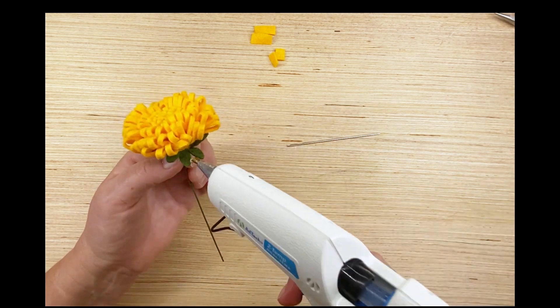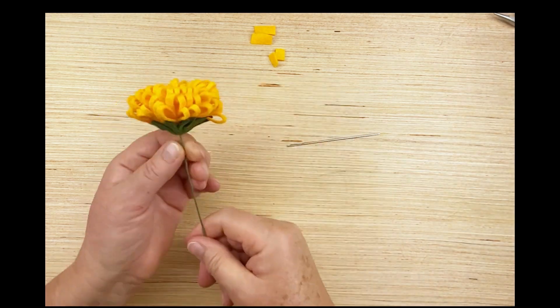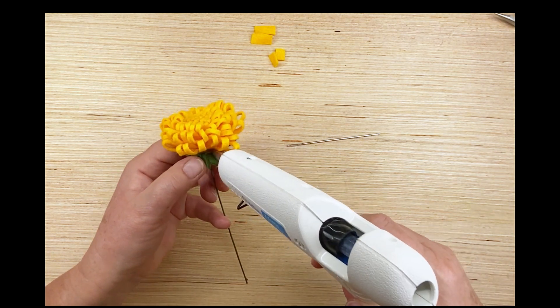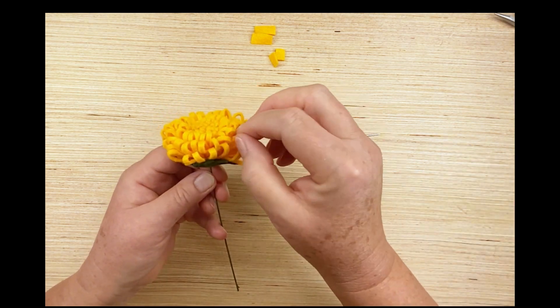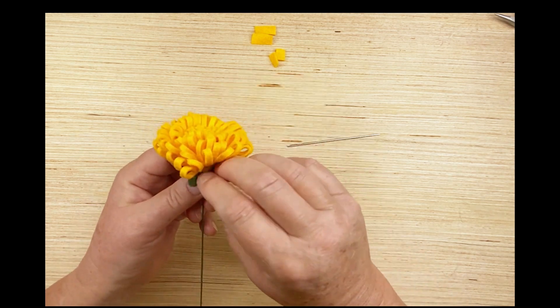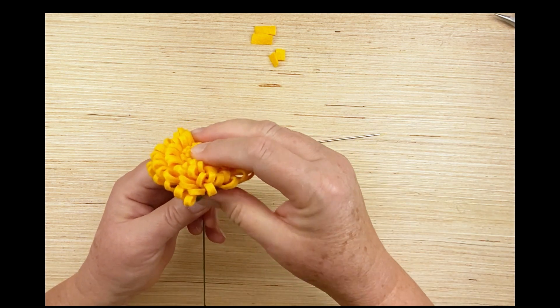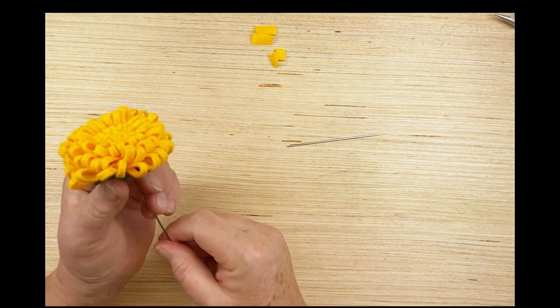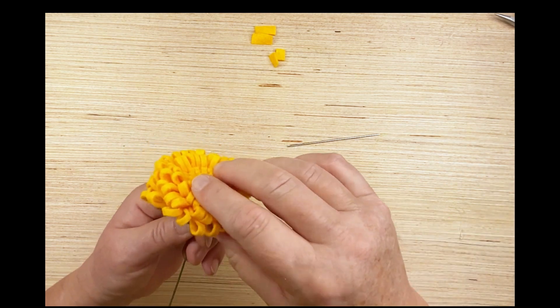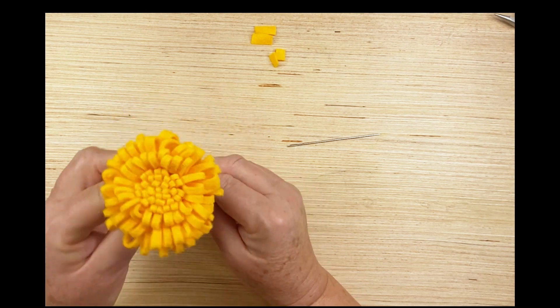And now we're going to glue these little leaves of the sepal in place so that it covers up all the stitching and all the folding that's gone on down there, so that nobody sees what's going on inside the flower, they just see a pretty chrysanthemum. Now we have it, one flower.